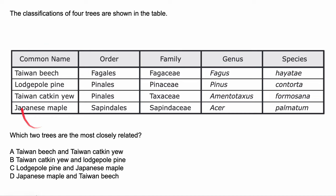Let's look first — do any of these share the same order? Taiwan Beech has Fagales. Lodgepole Pine is Pinales. Taiwan Catkin Yew is Pinales. And the Japanese Maple is Sapindales. So the two that share the same order are the Lodgepole Pine and the Taiwan Catkin Yew. Looking at family, these are the only two that share it, so we know the Lodgepole Pine and the Taiwan Catkin Yew are the most closely related. The answer is B.